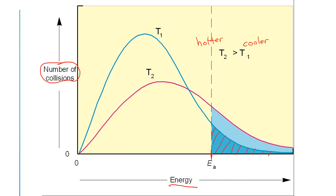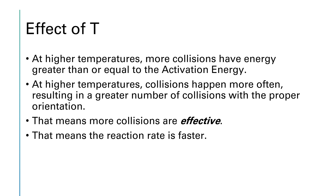At the higher temperature, not only do we have the same collisions that had sufficient energy at the lower temperature, but we also have many additional collisions that now exceed the activation energy. So at the higher temperature, there are more collisions that result in reaction, meaning the reaction rate will be faster at higher temperature. At higher temperature, more collisions have energy equal to or exceeding the activation energy, with the right orientation and the right energy, so the reaction rate increases.